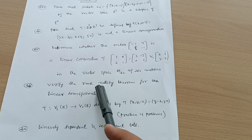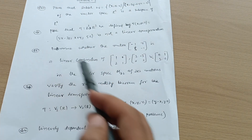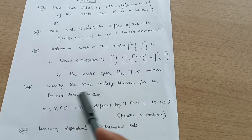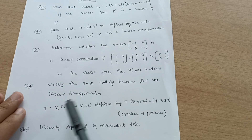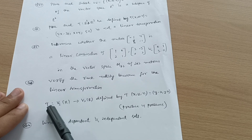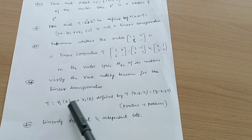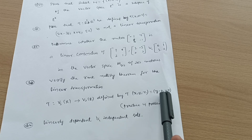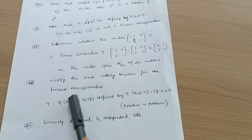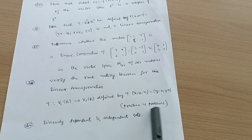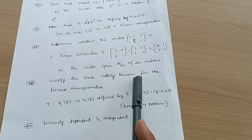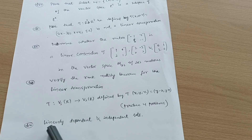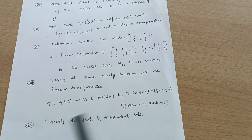Cover the rank-nullity theorem — this is in the second part of the question. Practice four problems on the rank-nullity theorem, for example, for the transformation from V3R to V2R defined by T(x, y, z) equals (y minus x, y minus z). This can get you seven marks. The next topic is linearly dependent and independent sets, which is also sufficient to cover Module 3.